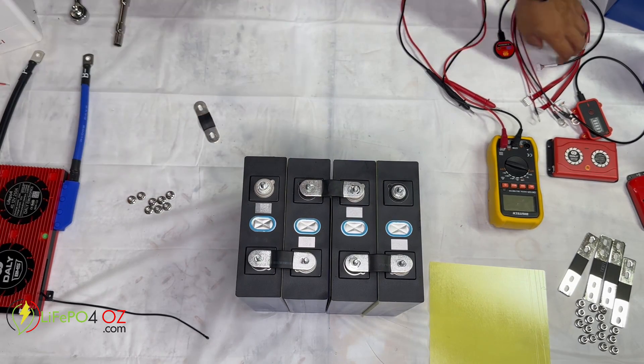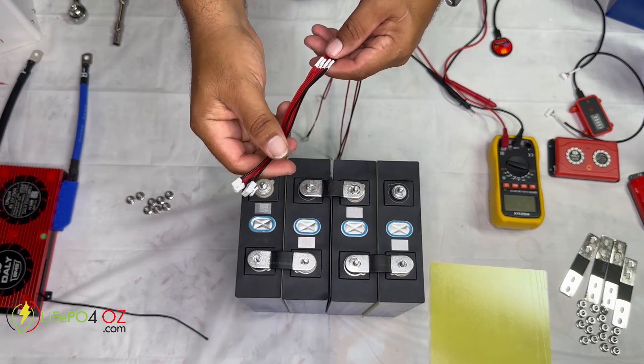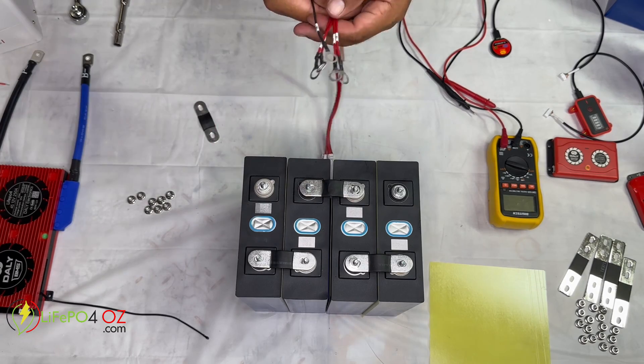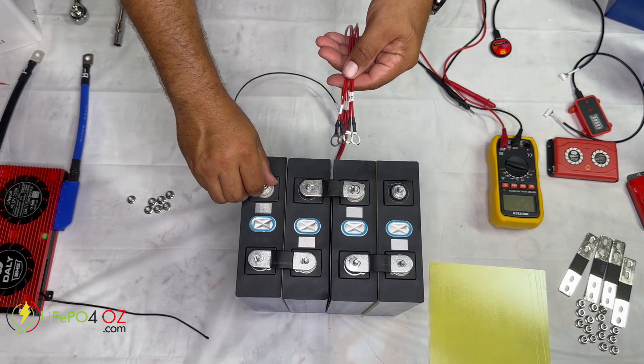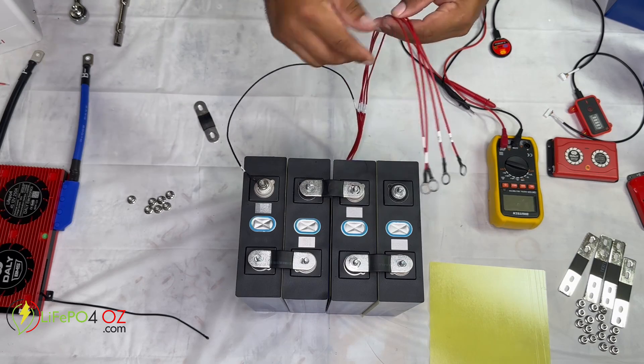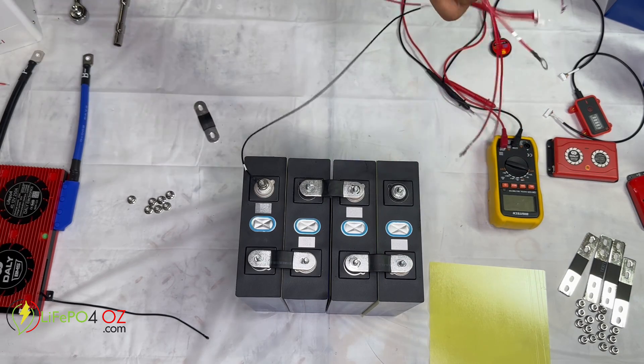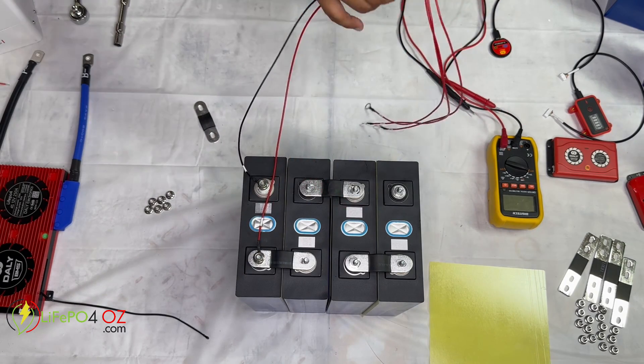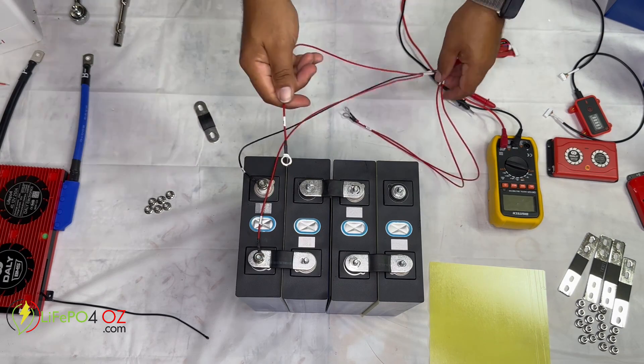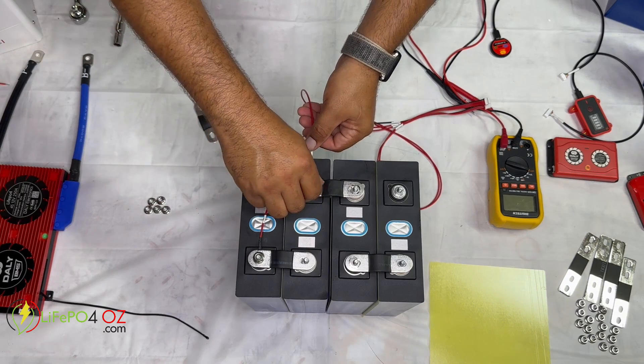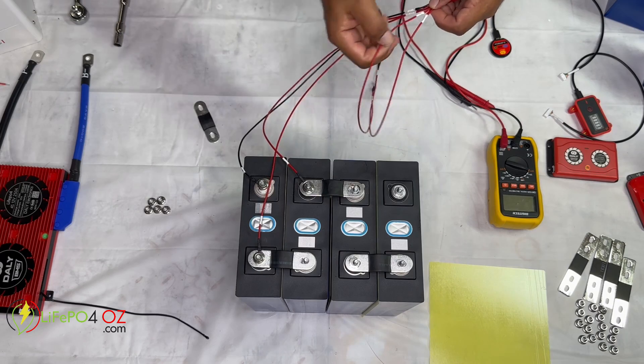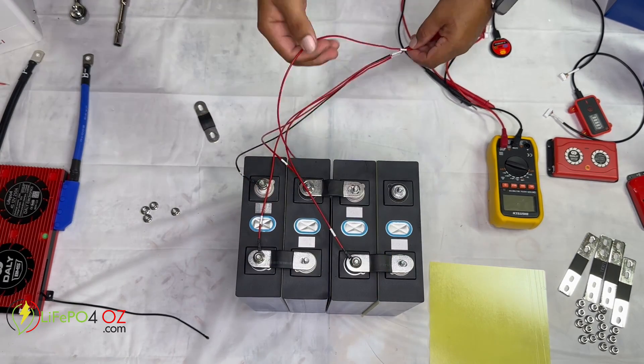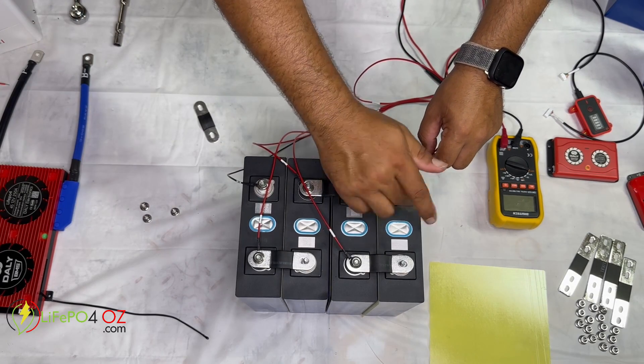Once we've got our cells like that, we go and we get our balance leads. Now these are our balance leads or our Y cable balance leads. So to connect up the balance leads we've got one black one and four red ones. To connect them up, we basically connect the first black one to the main negative of the bank. We'll call that cell number one. And then the next red one we connect to the positive of that same cell, so positive of cell number one. I'll just put some nuts there to hold them there. The next red wire then goes to the positive of cell number two. The next red wire then goes to the positive of cell number three. And the last one goes to the positive of cell number four or our main positive.